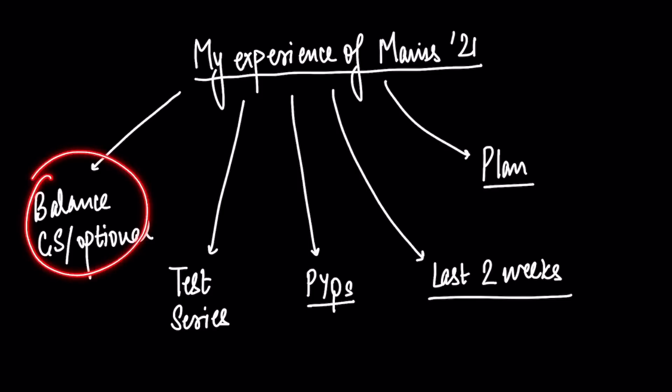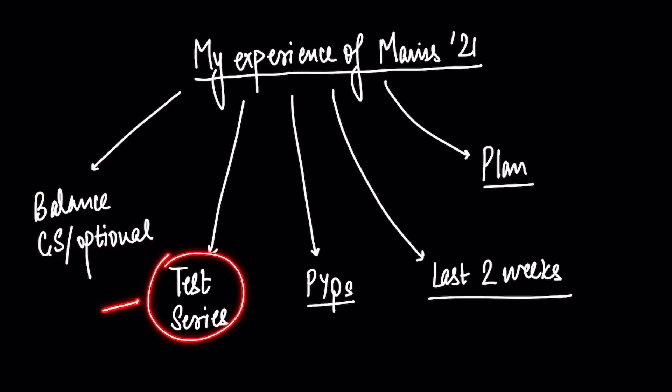Now, let me tell you what happened. Firstly, I did not understand how to balance GS and Optional. When I was studying Optional well, I felt that my GS was getting weak. And vice versa. When I was studying GS, it felt that my Optional was getting neglected. And I couldn't understand how a right balance can be struck.